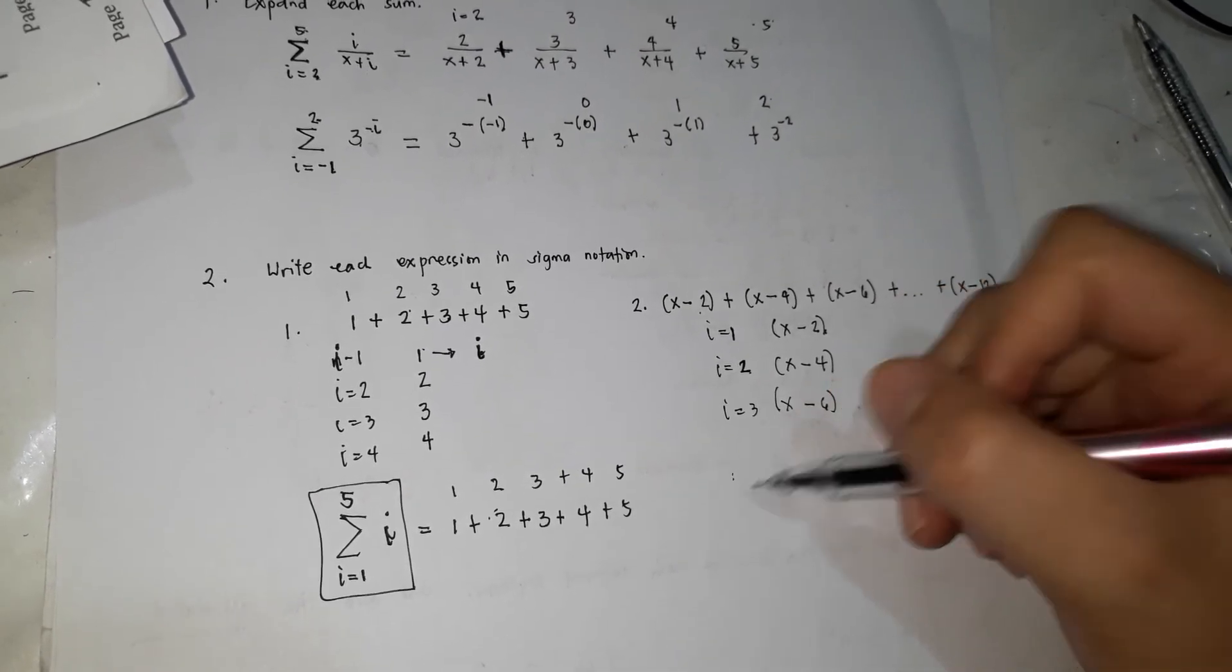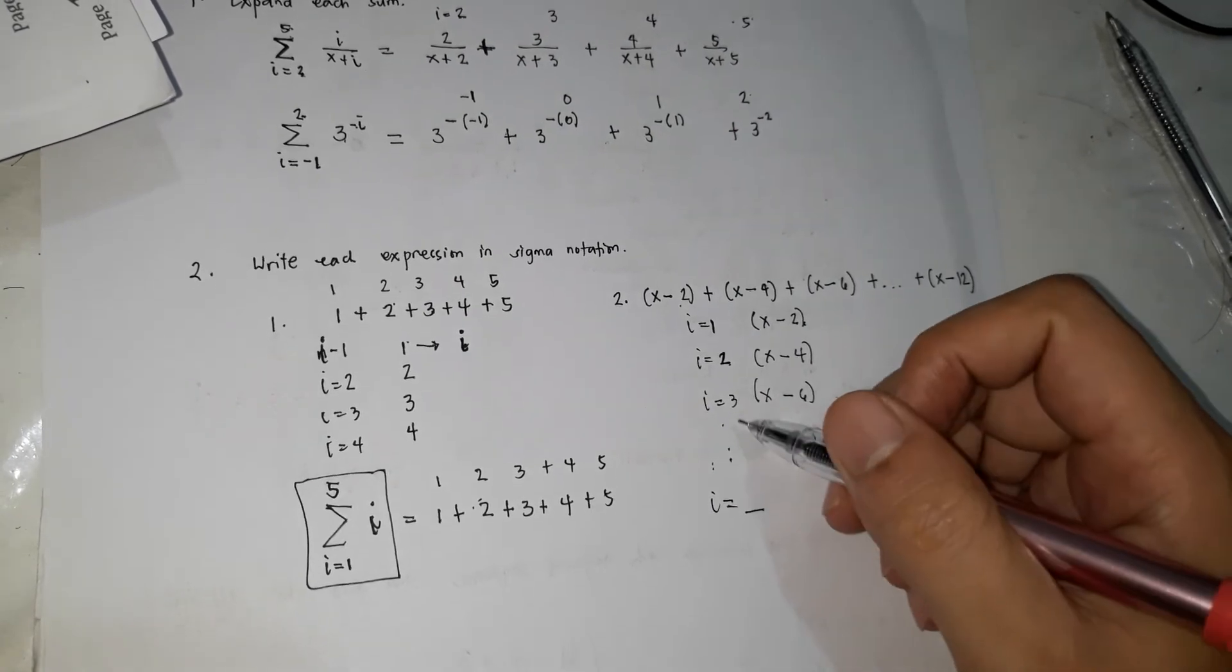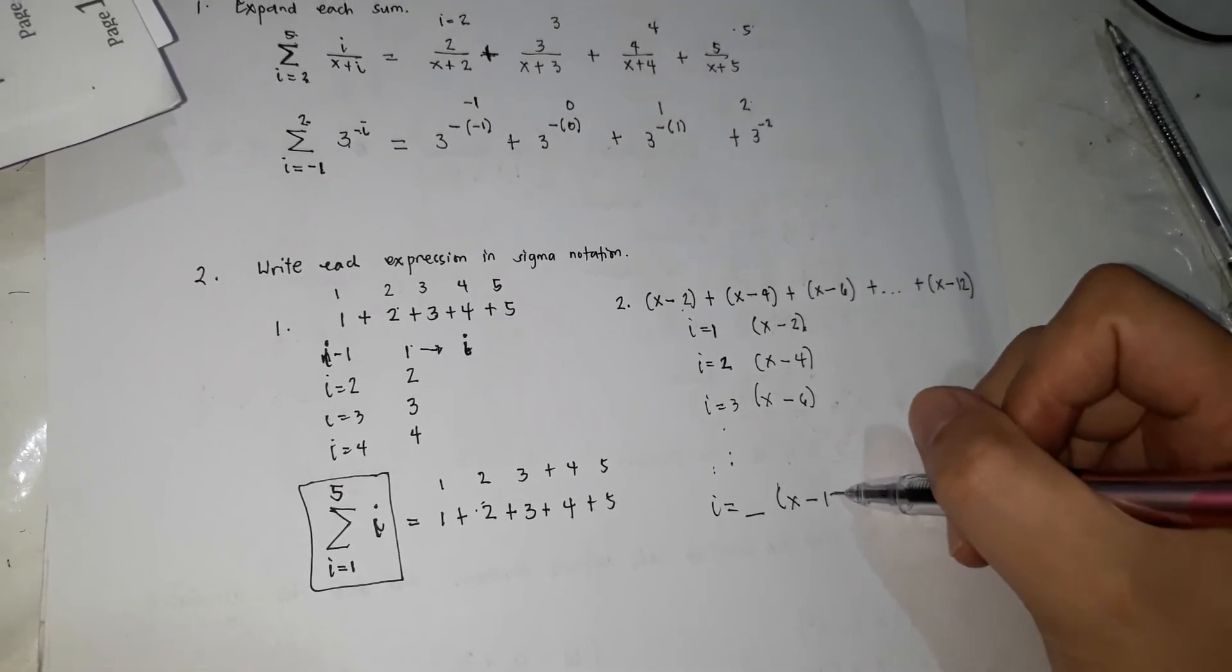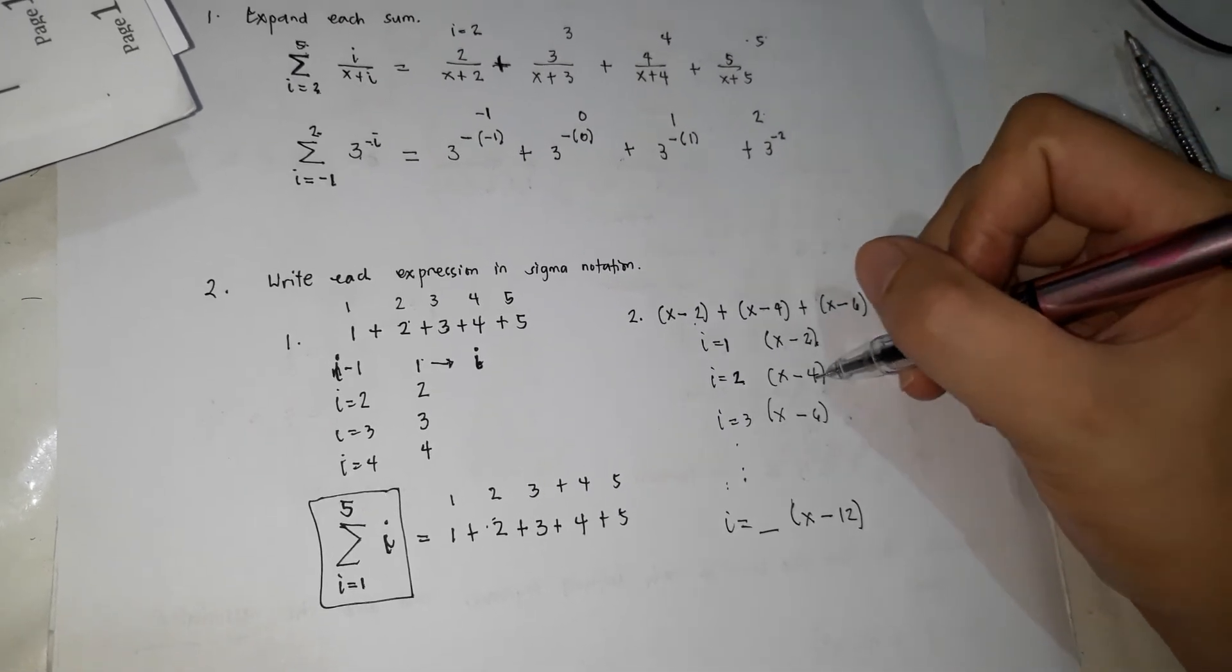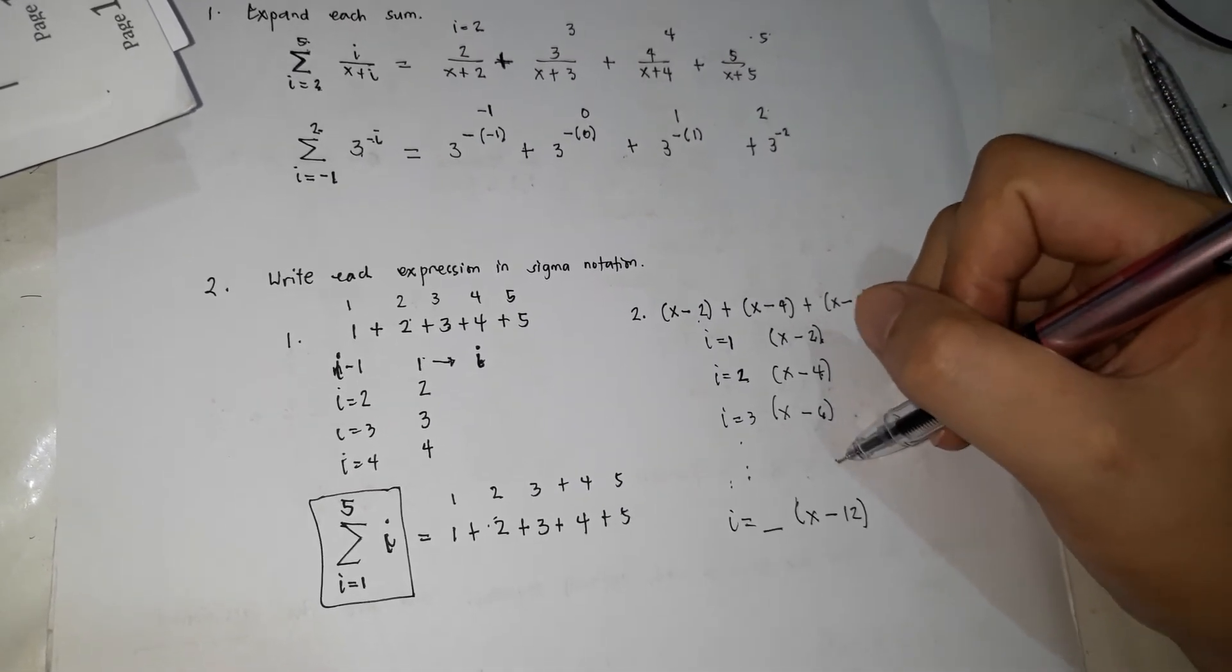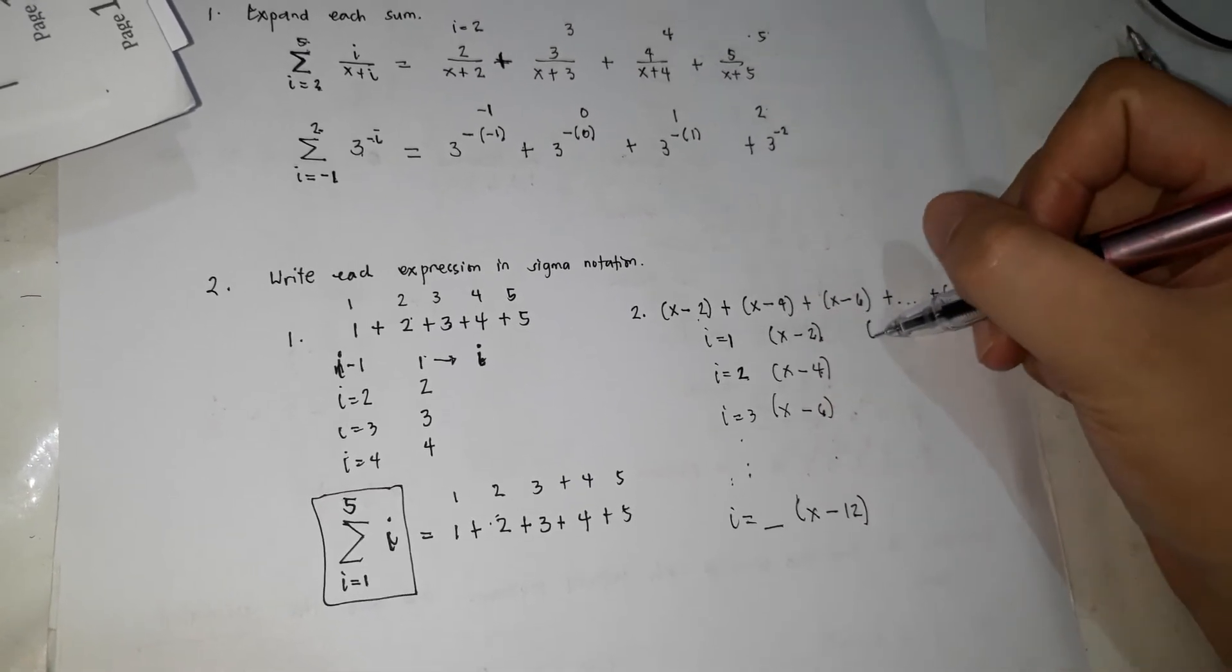When i is equal to blank, alamin natin mo saan. Anong ending? x minus 12. As you notice, dito, 2, 4, 6, 8, 10, 12. So gano'n siguro ang pattern.